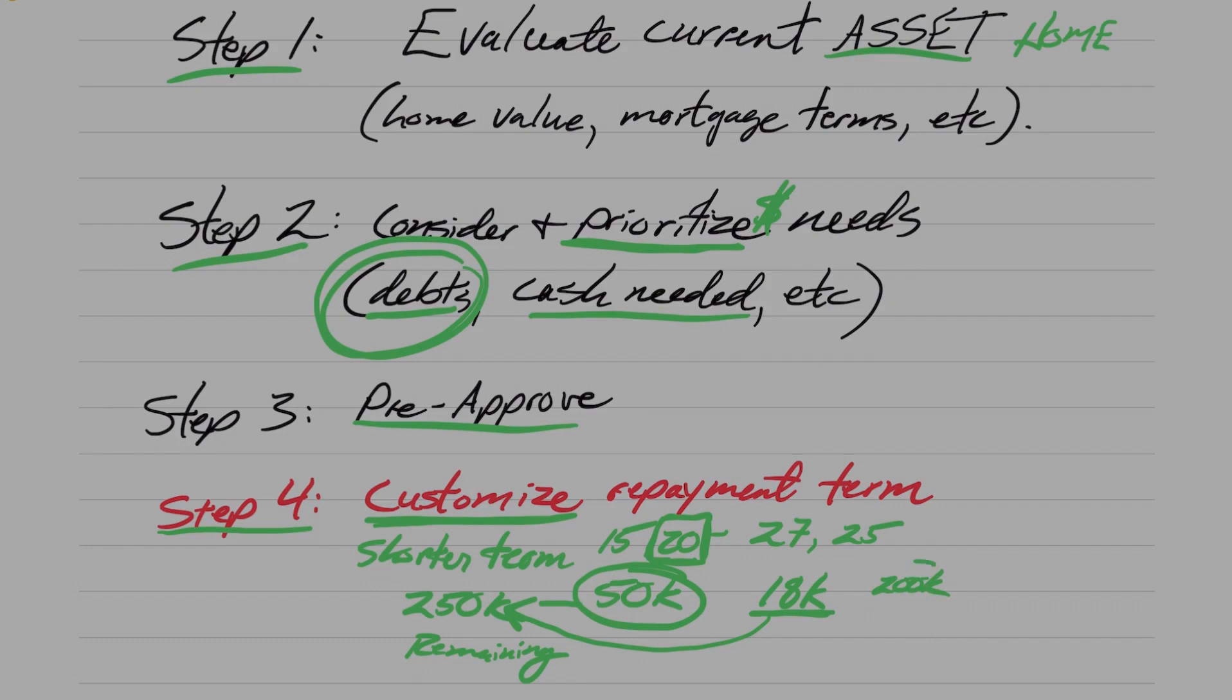So if they had just kept their old loan, they would have actually ended up paying, over the life of the loan, $18,000 more than borrowing an extra $50,000 and shortening the term to a 20-year. And that is only factoring in the mortgage interest. That did not even count all the debts that they paid with that $50,000. And their cash flow became incredibly positive for them because they killed all those debts and their house payment actually stayed about the same even though they borrowed an extra $50,000. So it was a slam dunk.